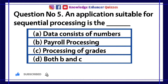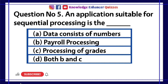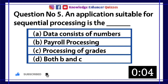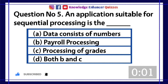Question number 5. An application suitable for sequential processing is dash? A. Data consists of numbers. B. Payroll Processing. C. Processing of Grades. D. Both B and C. Option D is the right answer.